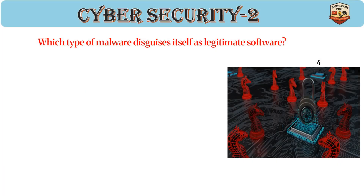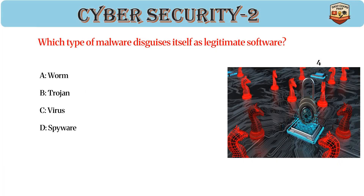Which type of malware disguises itself as legitimate software? Answer: B. Trojan. Trojans appear harmless but contain malicious code. They do not self-replicate like viruses. Often used to create backdoors for attackers.